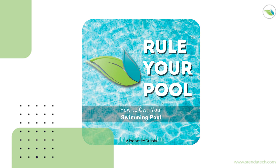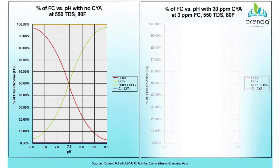There is a chart in the Orenda blog. You can find it by going to blog.orendatech.com, or if you have the app, go to the main menu, blog, and search CYA. You're going to find an article — Chlorine, pH, and Cyanuric Acid Relationships. That's what you're looking for. There's a graphic in there: two charts next to each other. That's what we're going to talk about. For those of you listening on YouTube, we will put this up on the screen right now. Take a look at that chart. If you're listening while you're driving, just check it out after the episode — it'll make a lot more sense.